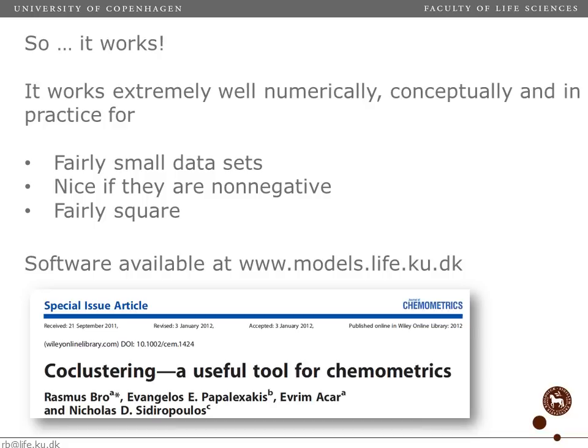Overall, co-clustering is a very interesting method for finding simple, interpretable parts of complex data. It works especially well on square data and when the data is non-negative. If centering is required, there can be problems with local minima. If you want to try co-clustering, algorithms are available on our website for download in MATLAB, and there is a paper with more details about everything explained in this presentation. Thank you.